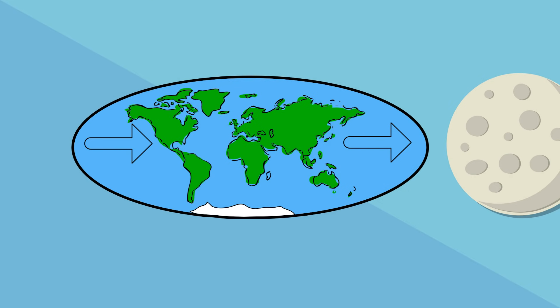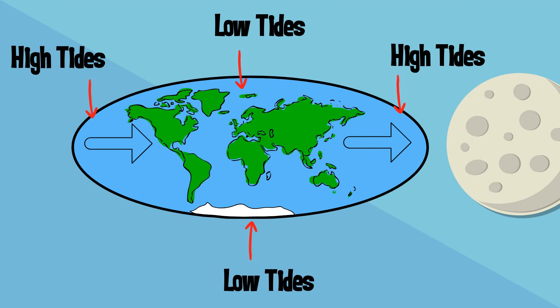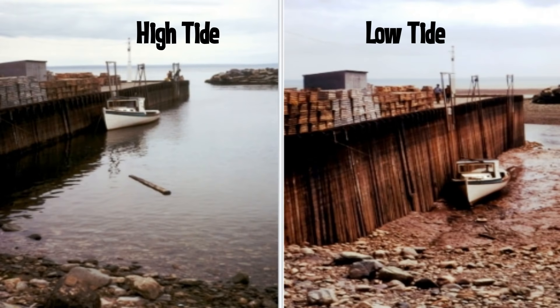Where the bulge is bigger, it's high tide. Where the water doesn't bulge, it's low tide. In this picture, you can see the difference between high and low tide.